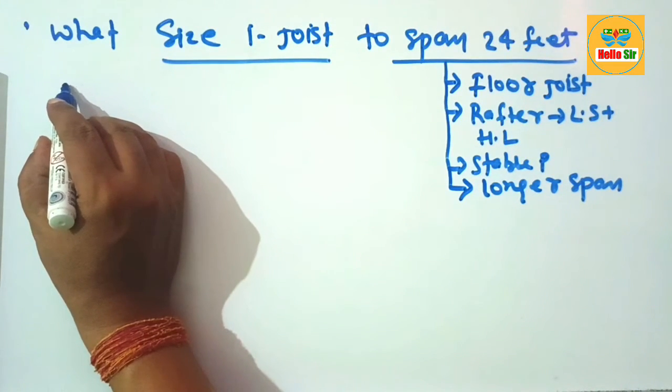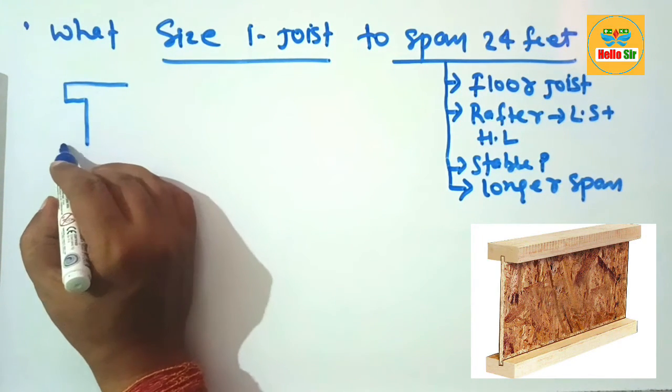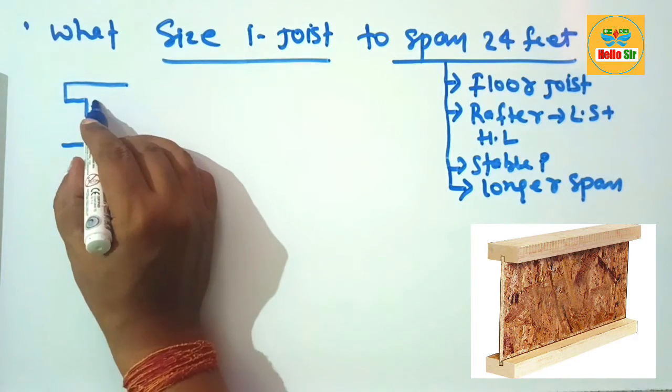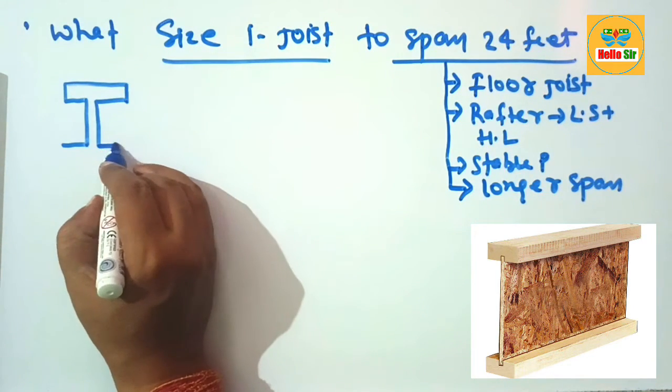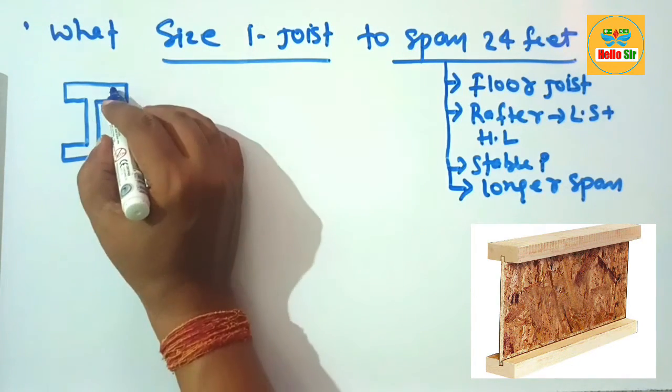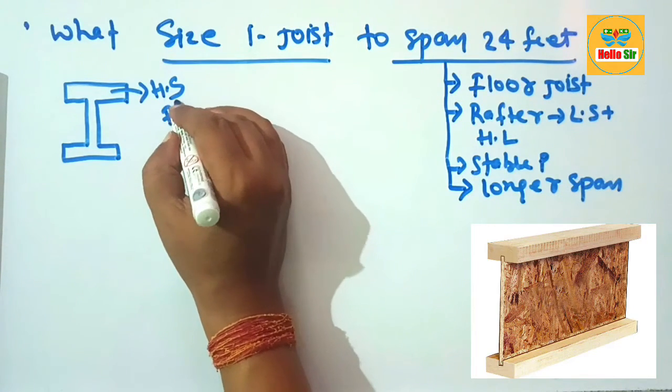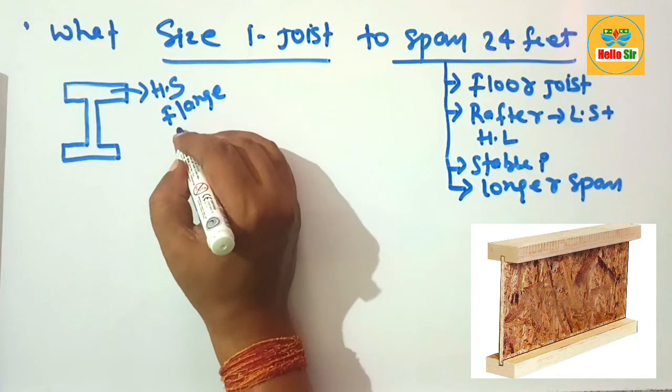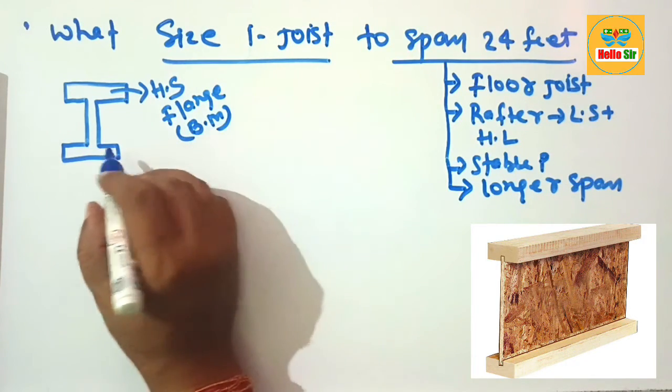Here we make a rough diagram for the wood I-joist that consists of horizontal sections and vertical sections known as flange and web. The horizontal section known as the flange resists bending moment acting on it.